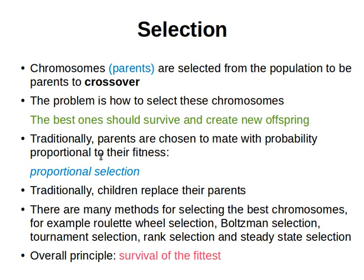This is called proportional selection. Traditionally, these children replace their parents, but we mentioned the problem of losing good candidate solutions from previous populations. We mentioned the idea of elitism, where we need to make sure that at least one good solution survives and stays in the next population. We choose them with probability proportional to their fitness and make sure good parents stay for the next population.